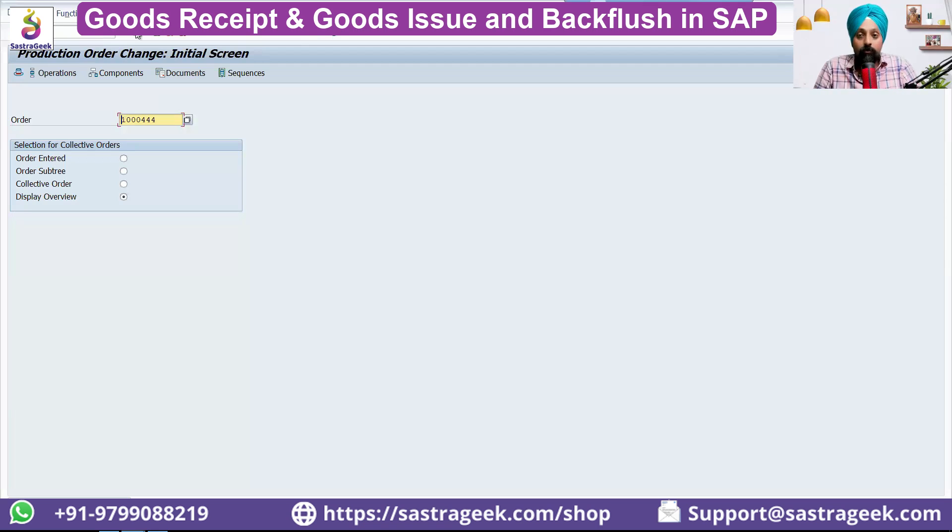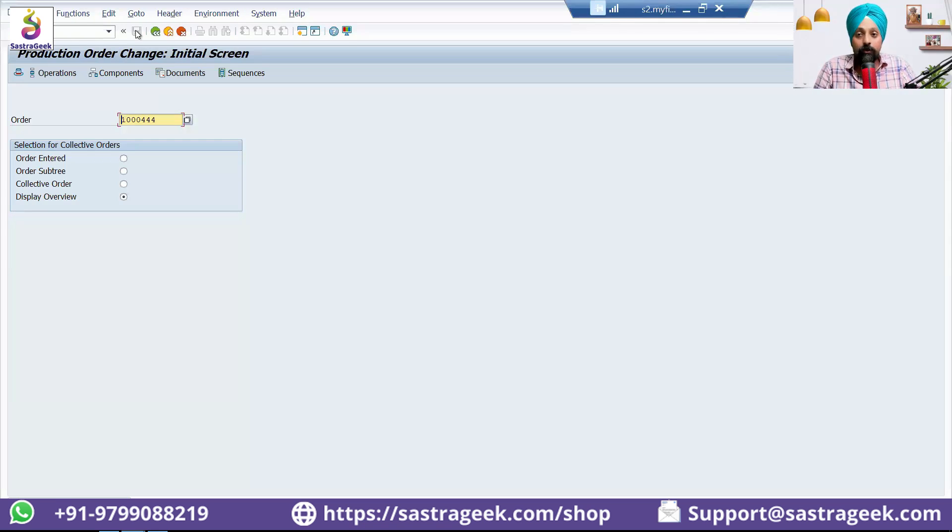But there can be the manual steps to issue the material to the production order. When we say issue the material to production order, it means getting consumed.